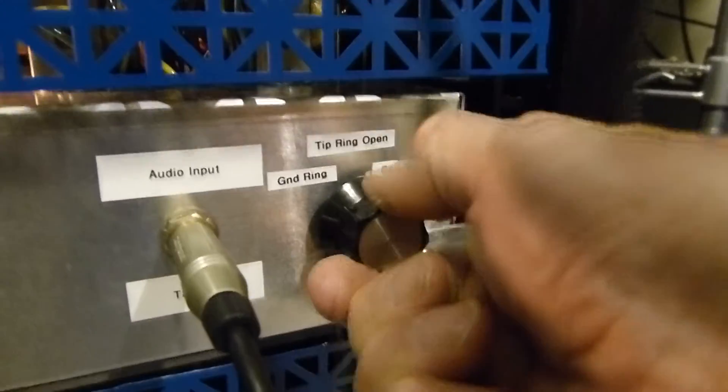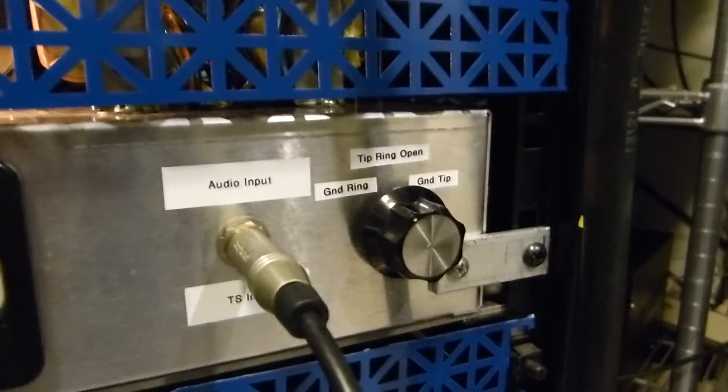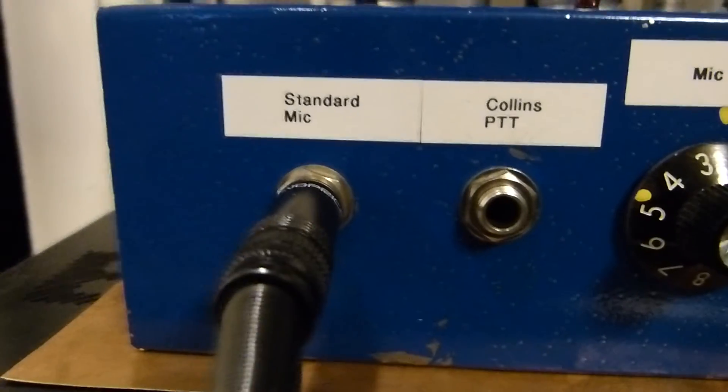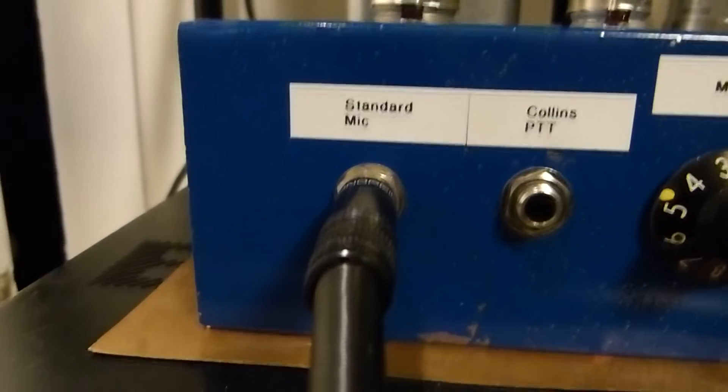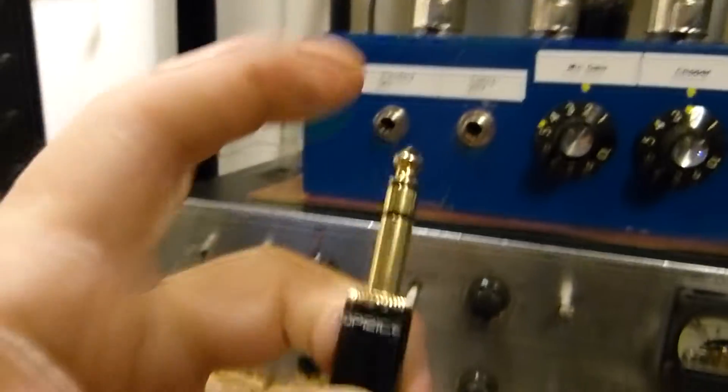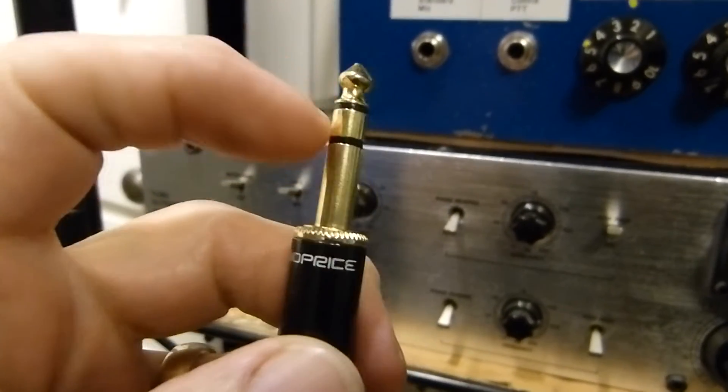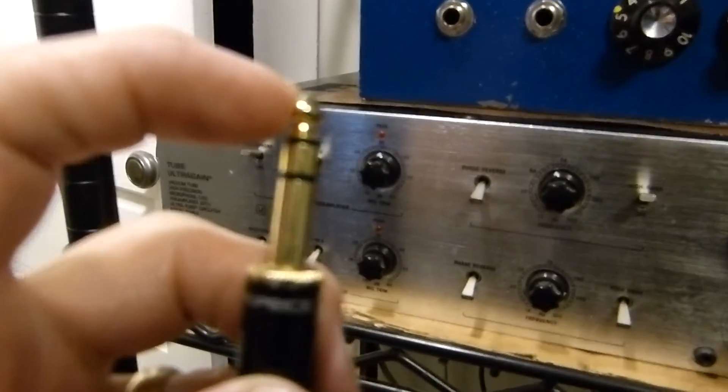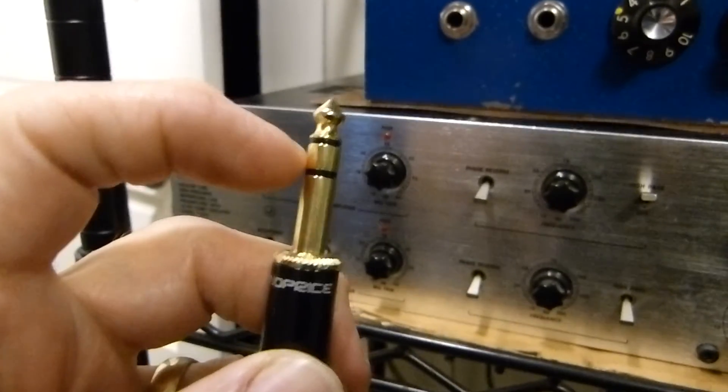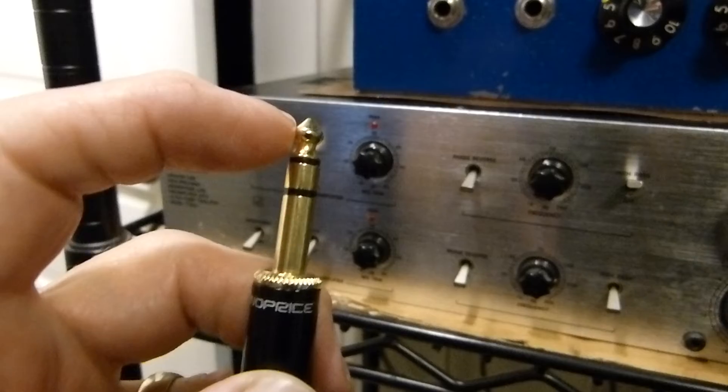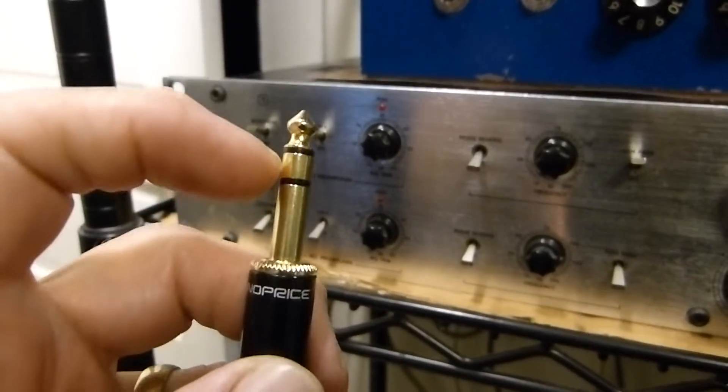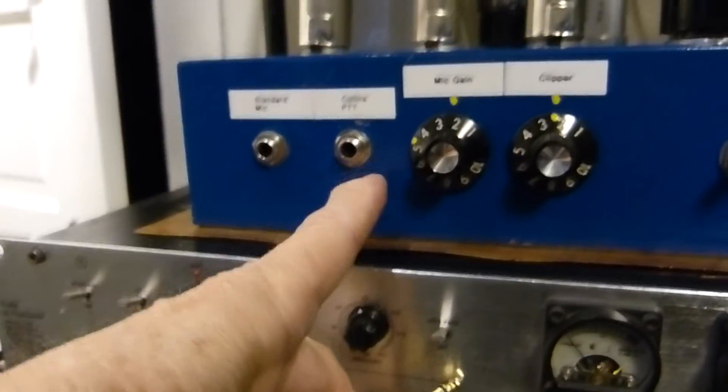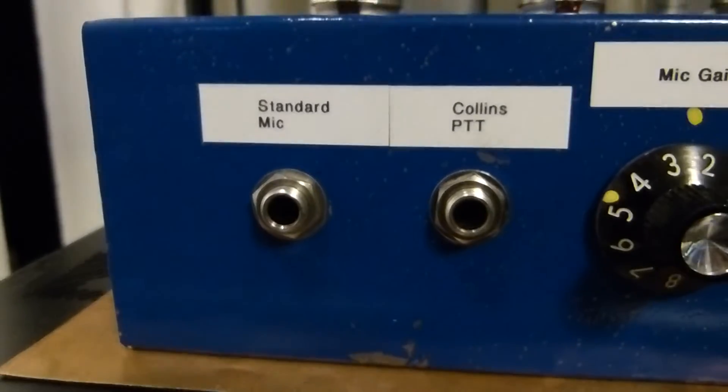Just depends on how it comes up. See, the thing about it is I'm not going to be plugging a microphone directly into there of course, but I did this over here a long time ago. One says standard mic - most microphones have the tip, this is called the tip, this is called the ring, and then this is the ground. Most microphones have the microphone connection on the tip and whatever they have on the ring, maybe nothing. But in Collins transmitters, they make the tip the PTT, the push-to-talk, and they put the hot microphone connection on the ring.